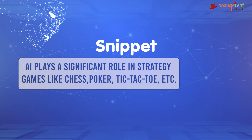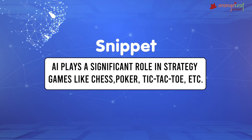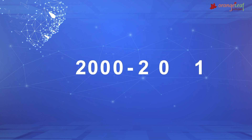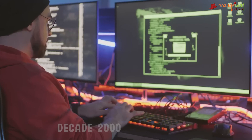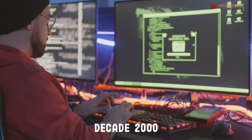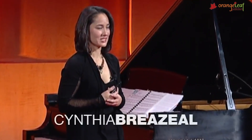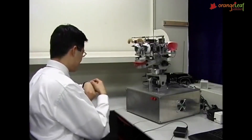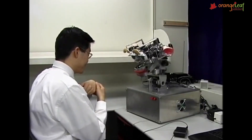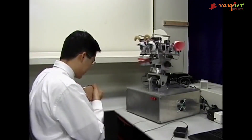Snippet: AI plays a significant role in strategy games like chess, poker, tic-tac-toe, etc. 2000 to 2010. Numerous attempts resulted in the effective development of AI technology. Professor Cynthia Breazeal created Kismet, a robot capable of recognizing and mimicking human emotions with its face.